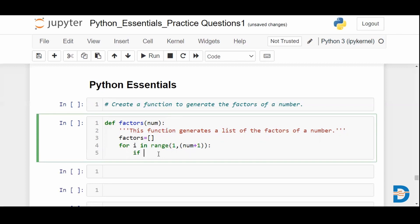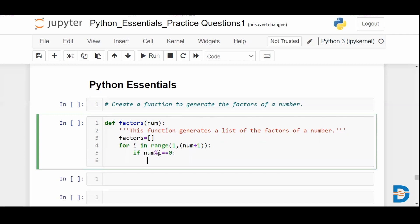Let's use the modulo operator. If num percentage i is equal to zero, then to the factors list we can now append the value of i.